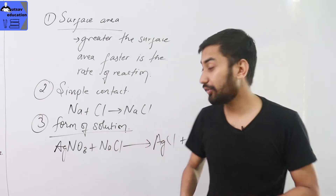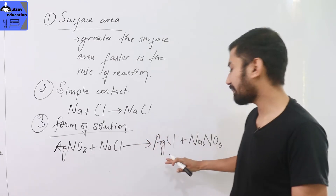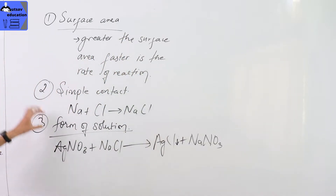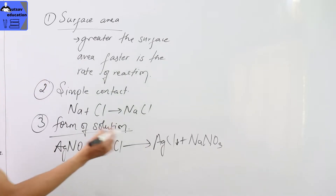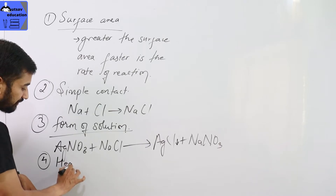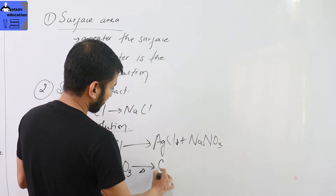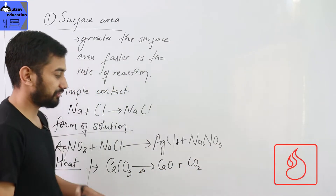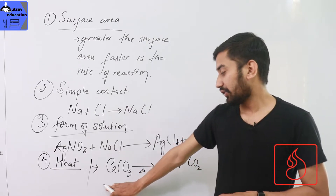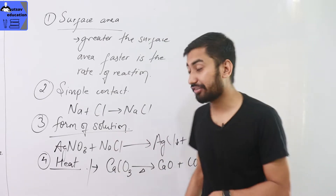This reaction takes place in solution form. Silver nitrate and sodium chloride are mixed; in solution form they readily react and there is a precipitation — shown by the downward arrow symbol. Heat is another factor that affects the rate of chemical reaction. The most common example is calcium carbonate.